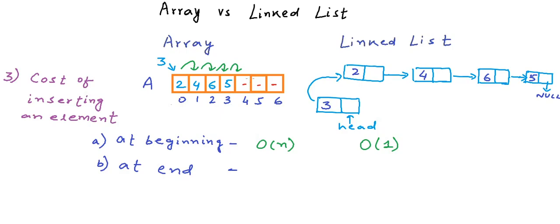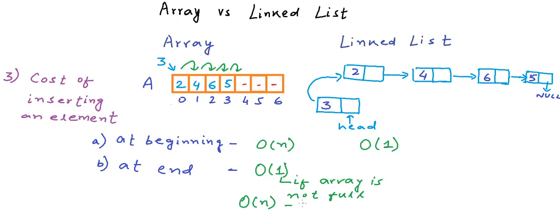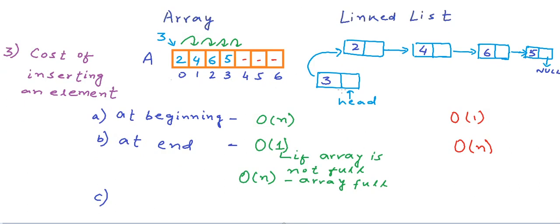Second scenario — inserting at the end: for a dynamic array, if there is space we just write to the next index, which is O(1). If the array is full, we create a new array and copy all content, which is O(n). For a linked list, inserting at the end requires traversing the whole list and then creating a new node and adjusting links, so time taken is proportional to n — O(n).